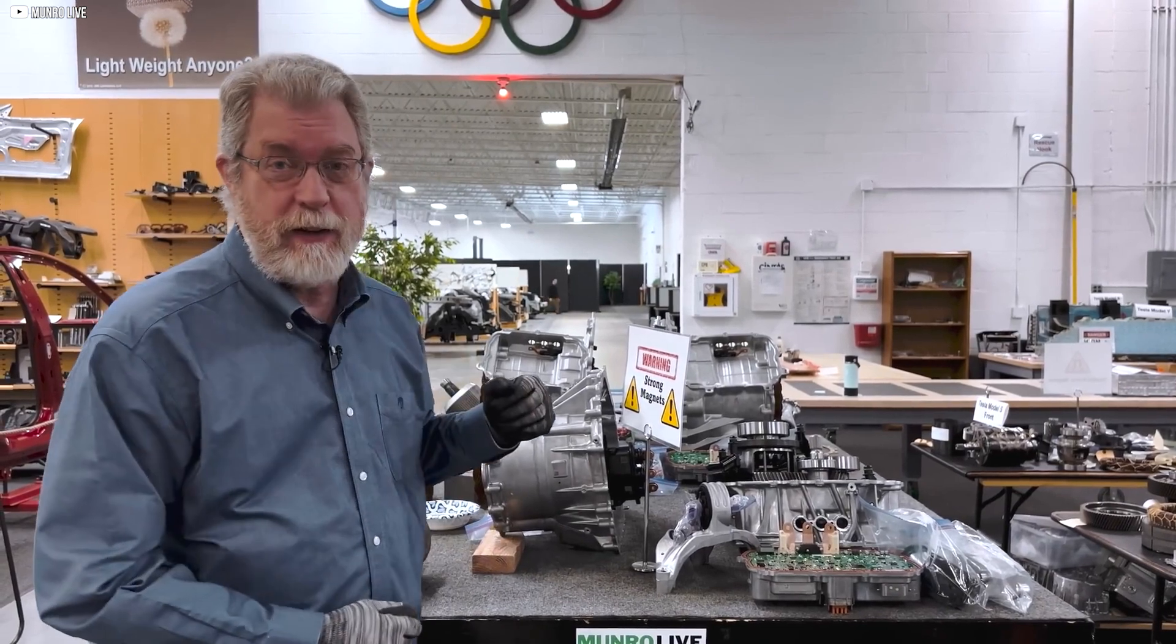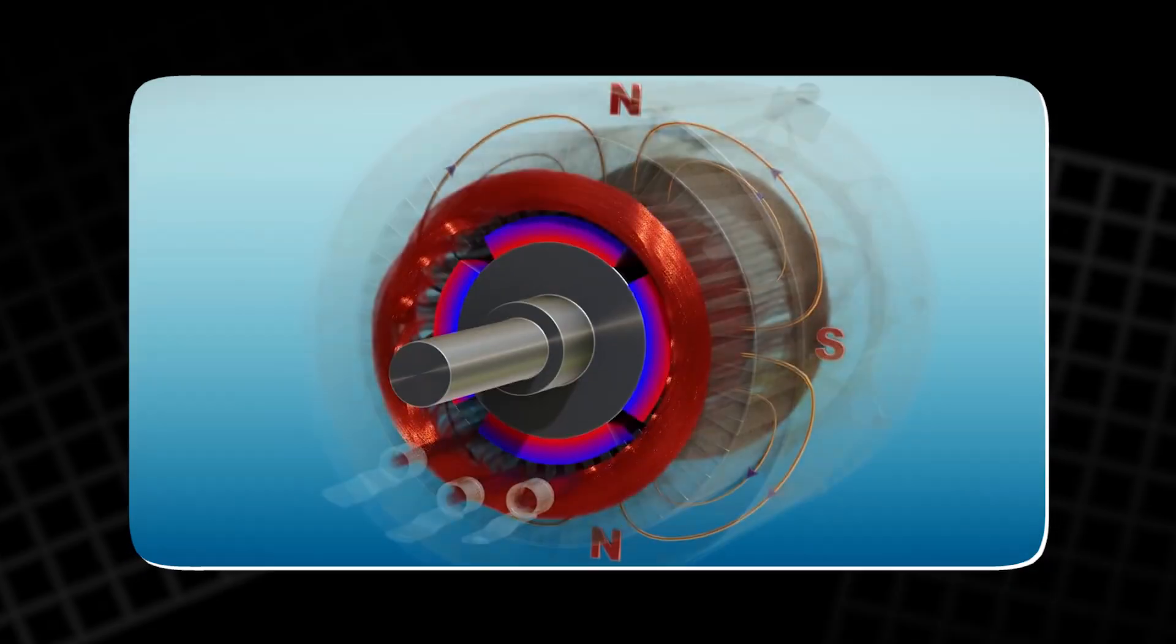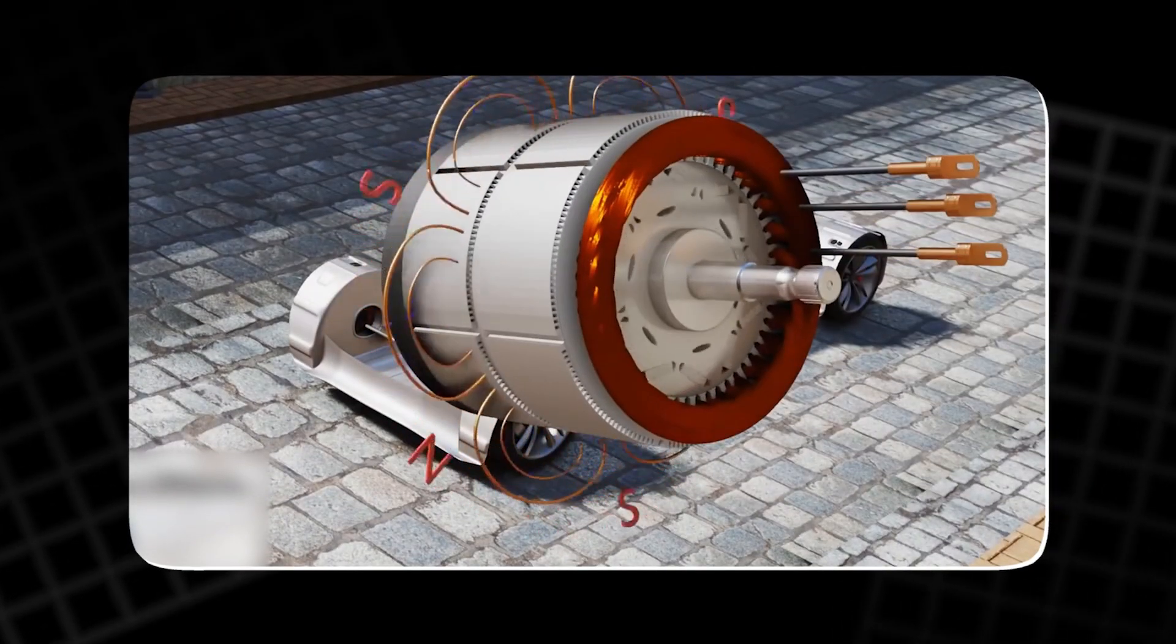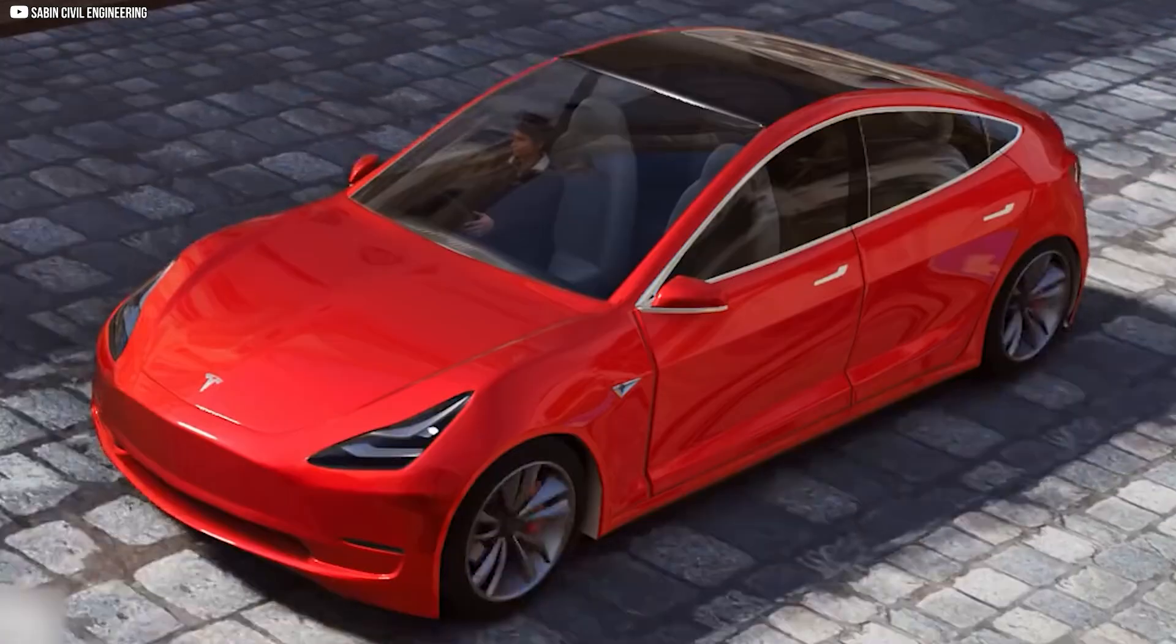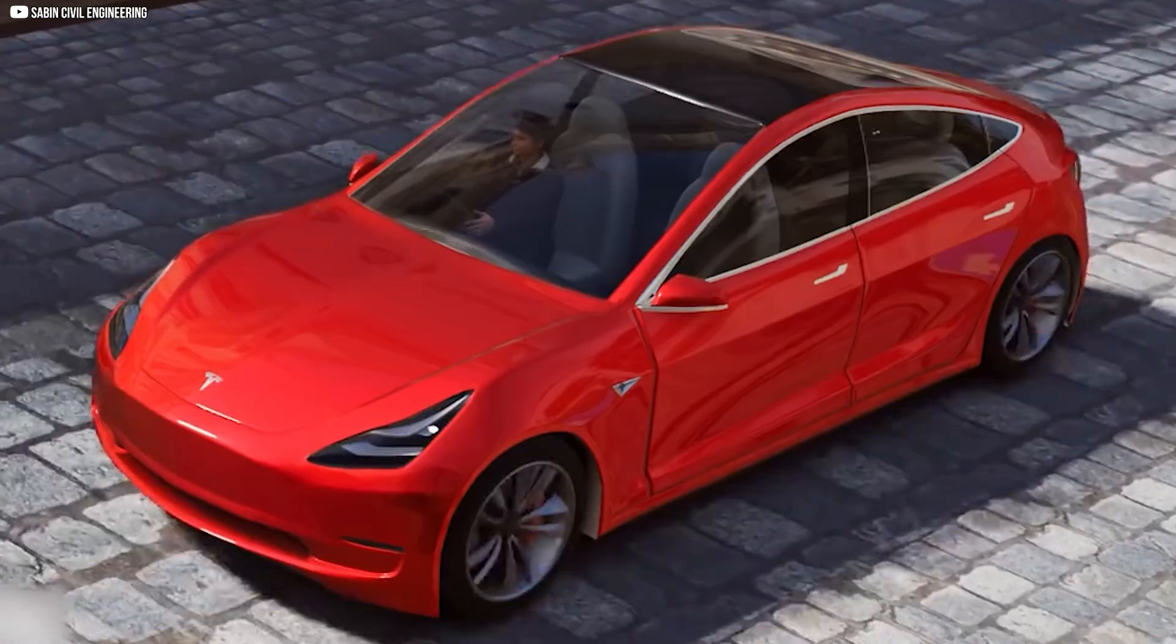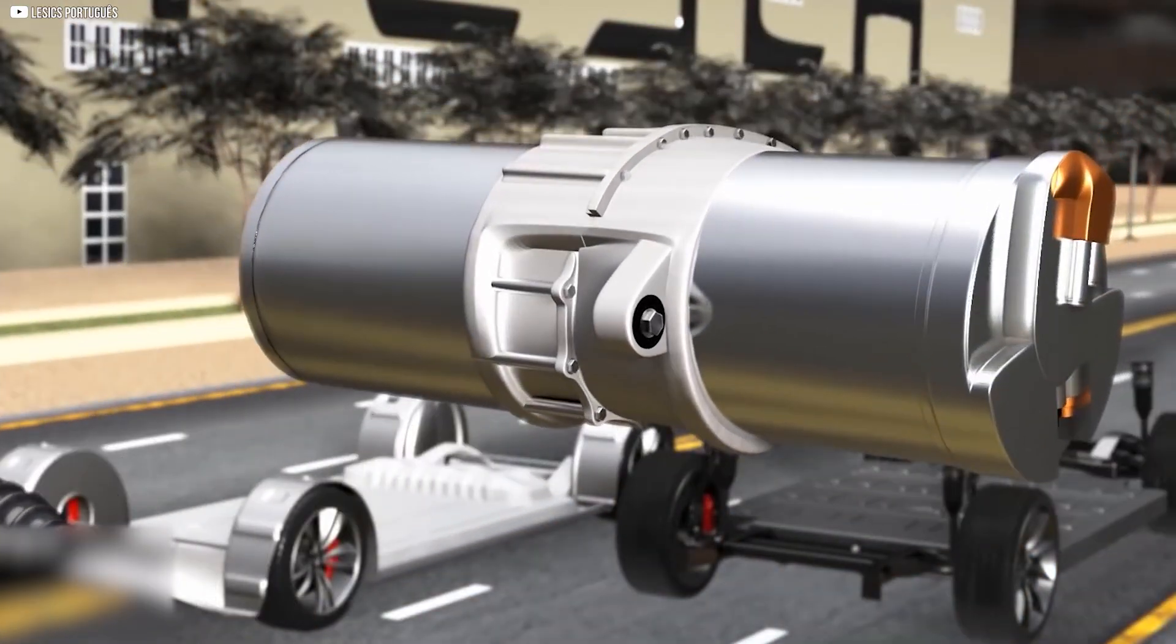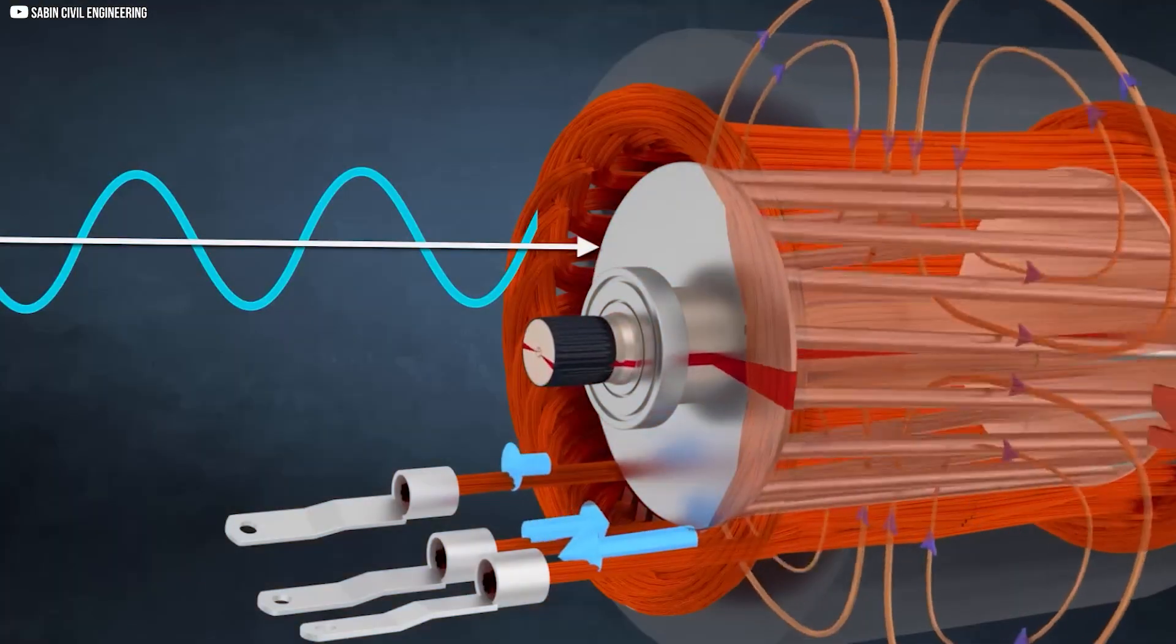The way Tesla controls the motor is just as important as its physical design. The Model 3's motor uses a sophisticated controller that adjusts the angle of the RMF rotating magnetic field relative to the rotor to optimize performance. At low speeds, the RMF is positioned about 50 degrees relative to the rotor's magnetic field, maximizing the torque output.